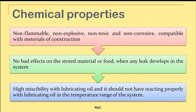Coming to the chemical properties, an ideal refrigerant should be non-flammable, non-explosive, and non-toxic — especially important if leakage occurs and it comes into contact with food items in a refrigerator. It should also be non-corrosive, compatible with the materials of construction of the pipelines and compressor, and have no bad effects on stored food materials.